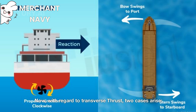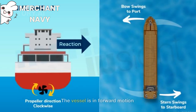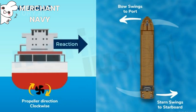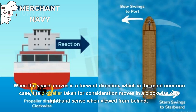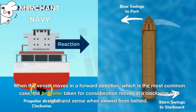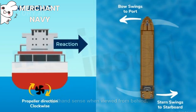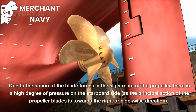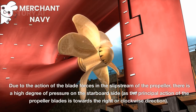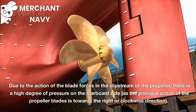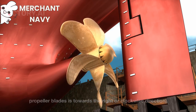Now, with regard to transverse thrust, two cases arise. When the vessel moves in a forward direction, which is the most common case, the propeller moves in a clockwise or right-hand sense when viewed from behind. Due to the action of the blade forces in the slipstream of the propeller, there is a high degree of pressure on the starboard side, as the principal action of the propeller blades is towards the right or clockwise direction.